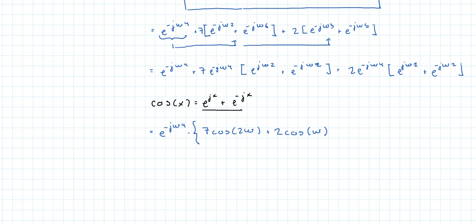I made a mistake here. It's over two so really what you should have is, sorry about that, should be seven times two times cosine and here it should be two times two times. So the mistake that I made is that I forgot to divide by two the identity for the cosine in terms of exponentials and so what we get is e to the minus j omega 4 times 14 cosine 2 omega plus 4 times cosine of omega.